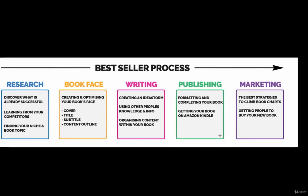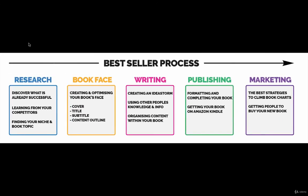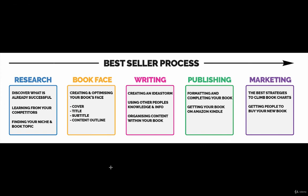So once again, let me zoom out. That is the bestseller process — this is an overview of it. Each module of the course, there are going to be five main modules, is going to focus on one at a time. Let's dive straight in.